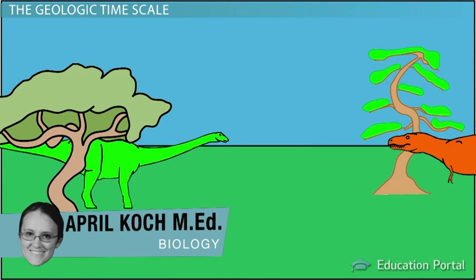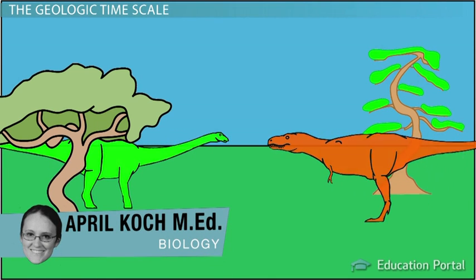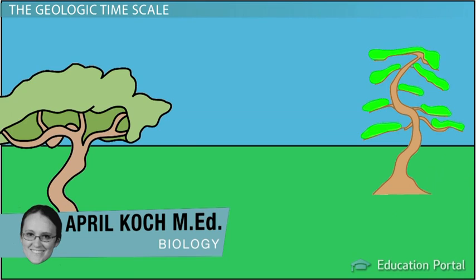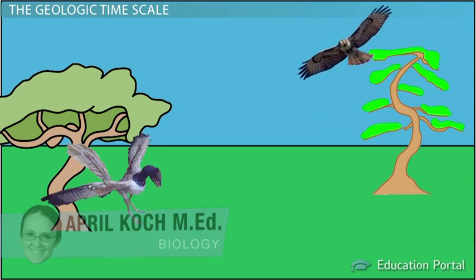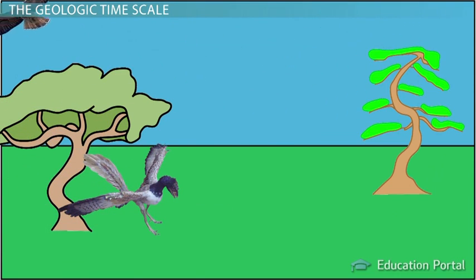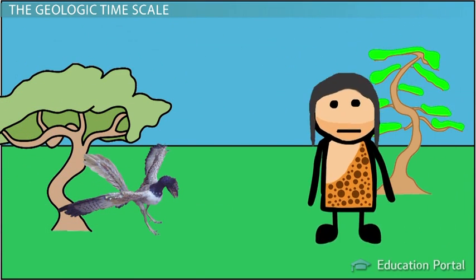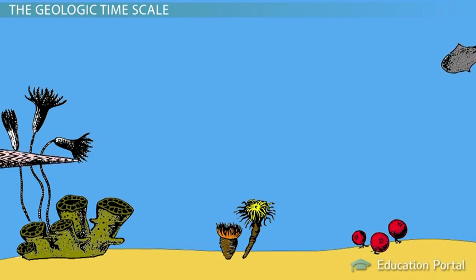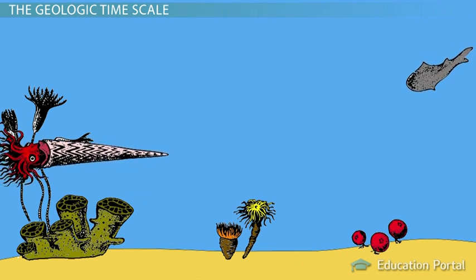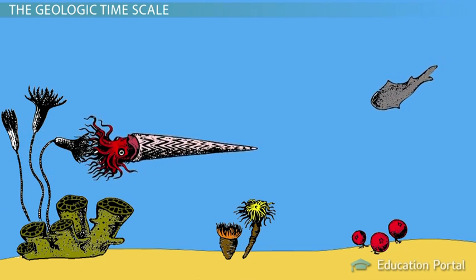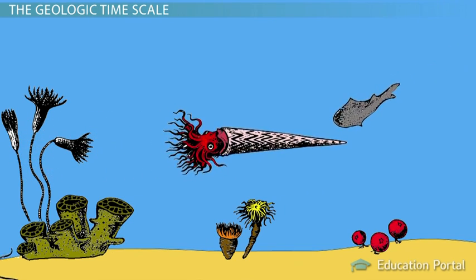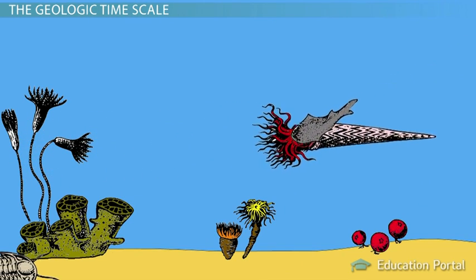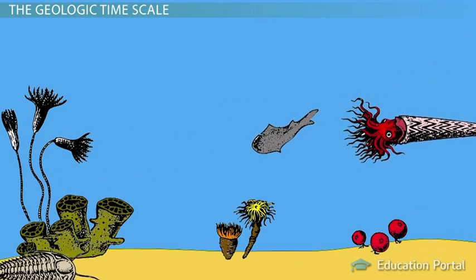How do we know when the dinosaurs died out? How do we know when birds first appeared on Earth, or when humans evolved? What about the beginning of life itself? How was our planet formed and populated by living things over time?